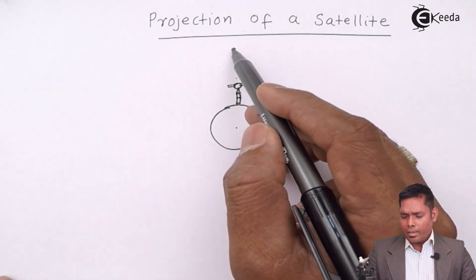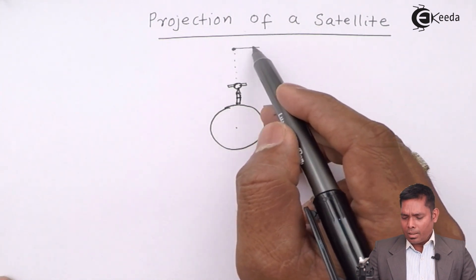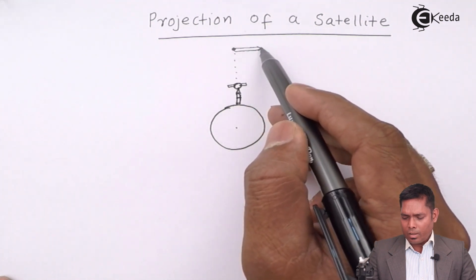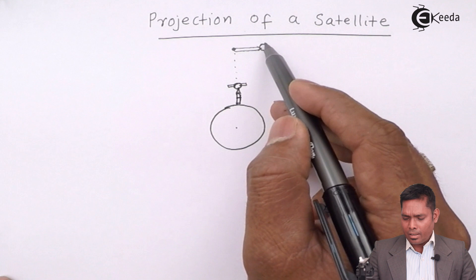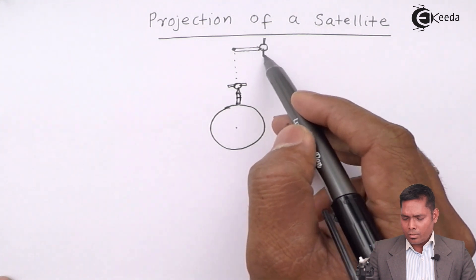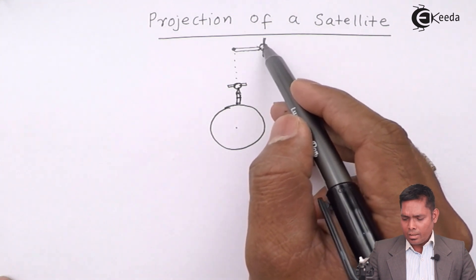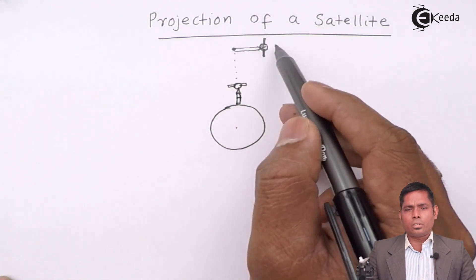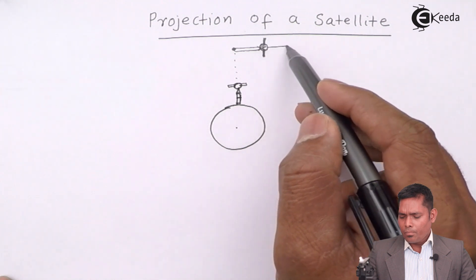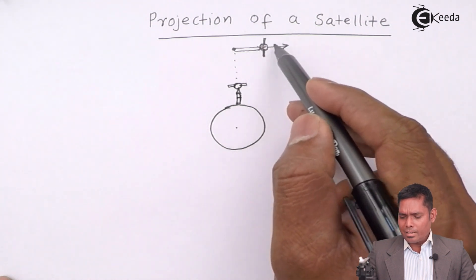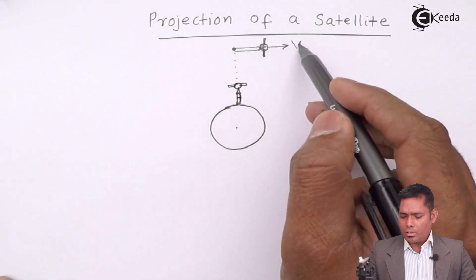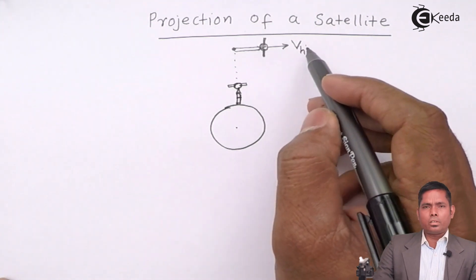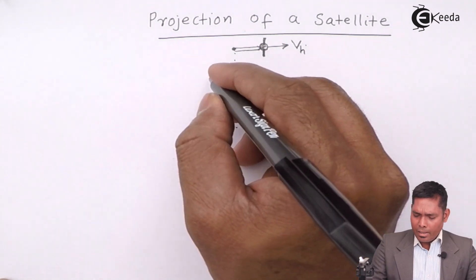At this height, the satellite is turned 90 degrees. The second stage of the rocket carries the satellite and, after the 90-degree turn, the satellite is fired with a sudden horizontal velocity vh. This is the velocity given at the desired height h above the surface of Earth.